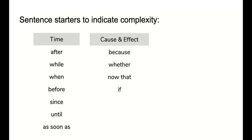To indicate cause and effect, you've got because, whether, now, that, and if. And to contrast, you've got although, even though, and whenever. So let's take a look at using a few of these so I can show you some examples.